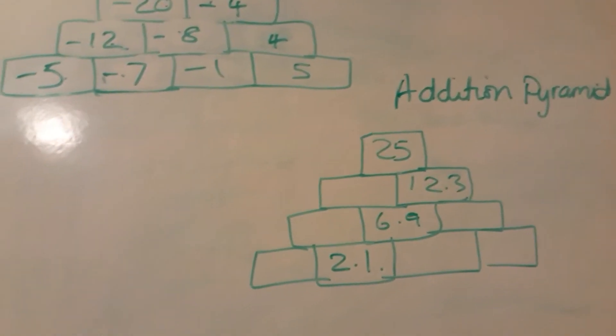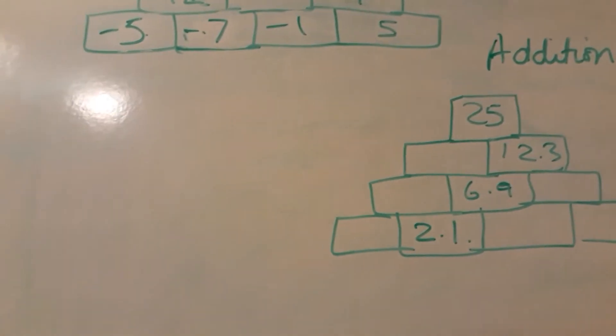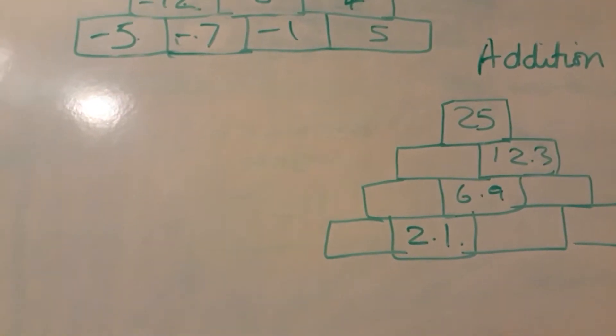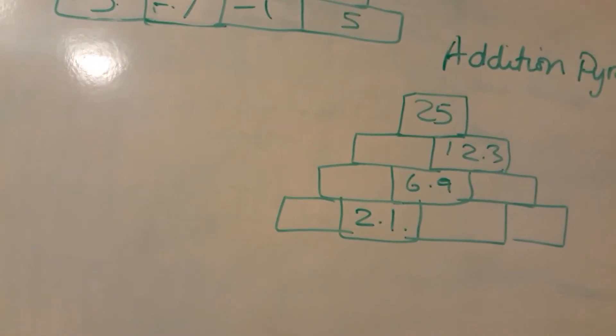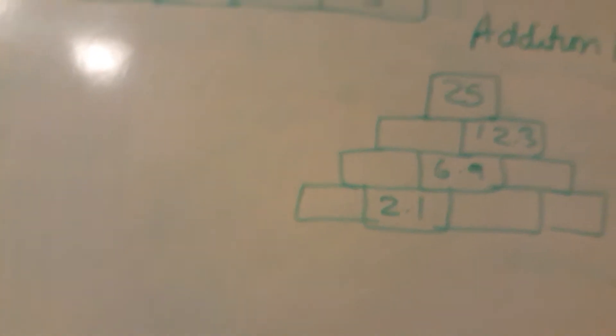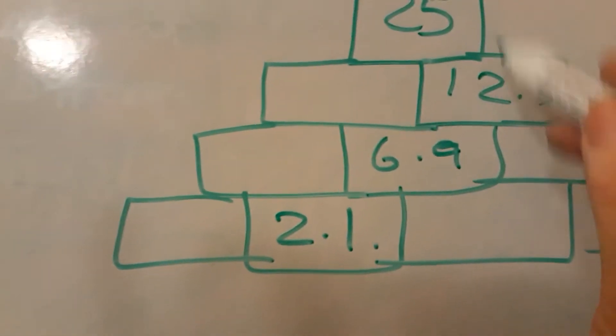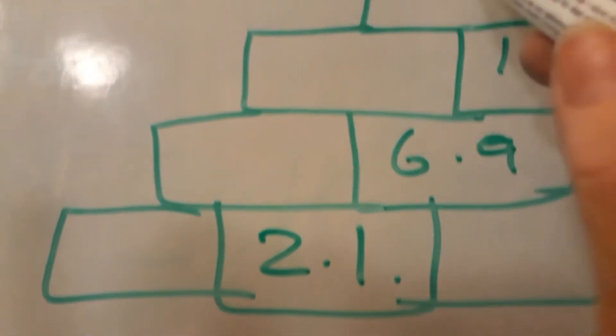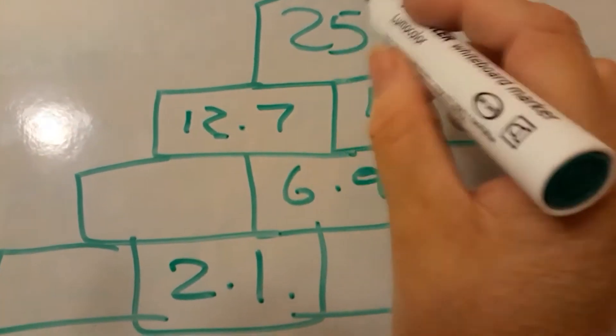Okay, so we start from the top. Basically, we're adding up these two numbers, or taking that away from that to make that number. So this would be 12.7. Either way, if you take that away from that, then that's your answer. Again, taking that away from that gives you...